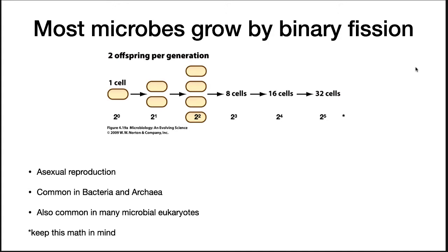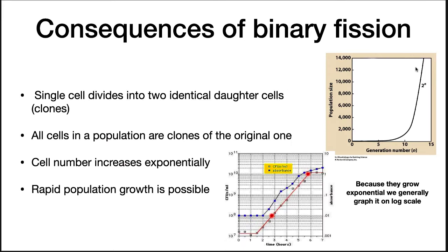Keep this math in mind. If cells divide by binary fission, cell numbers increase exponentially by powers of two. Thus, for bacteria, rapid population growth is possible. It all depends upon the time it takes to go through a division. Because bacterial growth is exponential, it is customary to graph their population using a log scale.